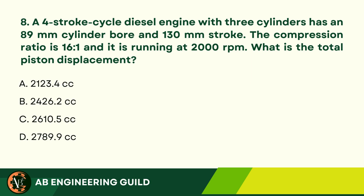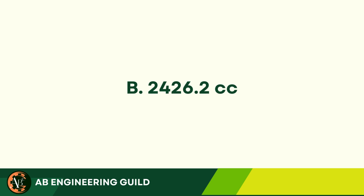Question 8: A 4-stroke cycle diesel engine with 3 cylinders has an 89-millimeter cylinder bore and 130-millimeter stroke. The compression ratio is 16 to 1 and it is running at 2,000 RPM. What is the total piston displacement? A. 2,123.4 cubic centimeters. B. 2,426.2 cubic centimeters. C. 2,610.5 cubic centimeters. D. 2,789.9 cubic centimeters. Answer: B. 2,426.2 cubic centimeters.